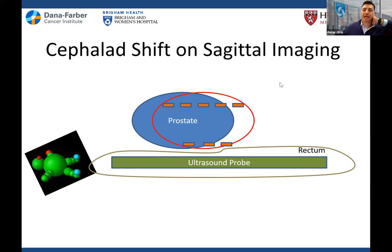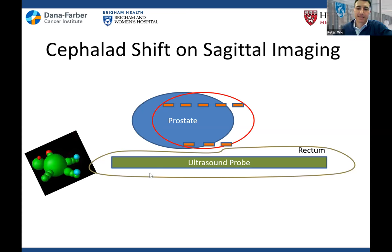The most common thing that happens is the prostate shifts cephalad — towards the head — because of needle speed. If you're doing the implant with someone who's more tentative and not advancing the needle quickly through the prostate, you can push the prostate up. This is something we all learn regarding needle speed. If you push the prostate up, you lose sight of the base and continue as normal — now you've dragged your needles too low, towards the urogenital diaphragm and external sphincters, where you can cause strictures. Pay attention to your anatomy.